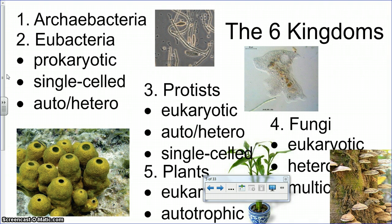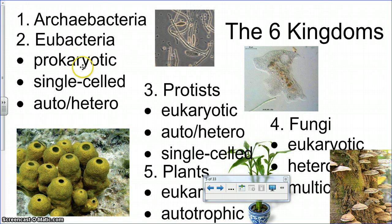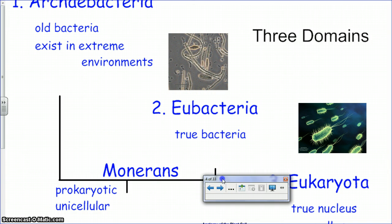So groups three, four, five, and six on this sheet are all known as eukaryotes, which means they have a nucleus. The archaebacteria and eubacteria don't have a nucleus, so they're prokaryotic. Some eukaryotes are like bacteria in that they have one cell — so a protist has a nucleus, which makes it a eukaryote, but it's only made of one cell, like bacteria. You will be responsible for knowing these characteristics. I may ask you what kingdom an organism belongs to, using either the six-kingdom system or the three-domain system.